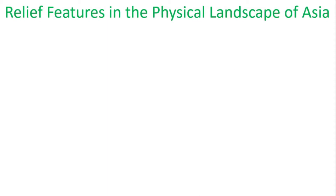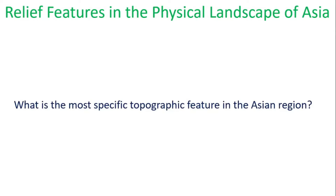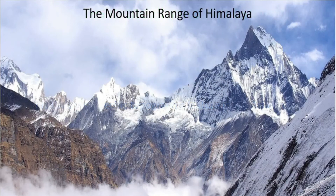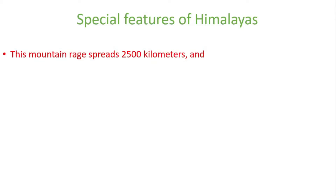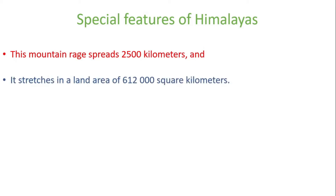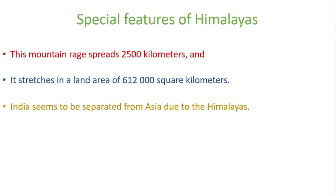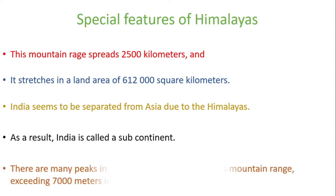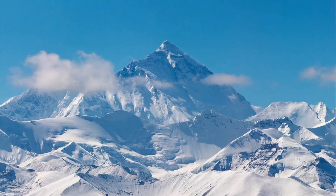I would like to draw your attention to special features of the Himalayas. This mountain range spreads 2,500 kilometers and it stretches in a land area of 612,000 square kilometers. India seems to be separated from Asia due to the Himalayas. As a result, India is called a subcontinent. There are many peaks, including Everest, located on this mountain range, exceeding 7,000 meters in altitude. This is a picture of the mountain range of Himalaya.